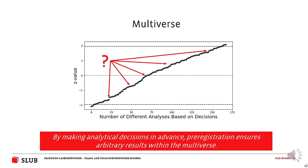Pre-registration also works in the context of the multiverse idea. Each different result reflects a combination of decisions made throughout the data analysis. Pre-registration forces us to make those decisions in advance, which ensures we end up with an arbitrary result within the scope of the multiverse — and statistically, the vast majority of results reflect the true effect. This avoids the trend that might be produced if we're able to make those decisions while conducting the analyses and observing their effects on the data.